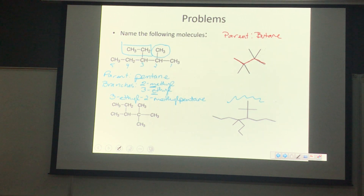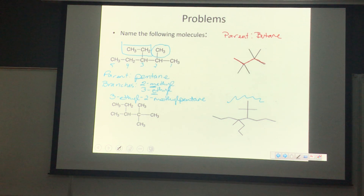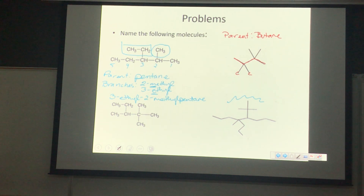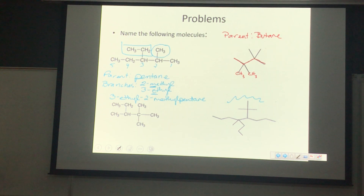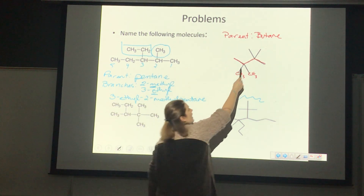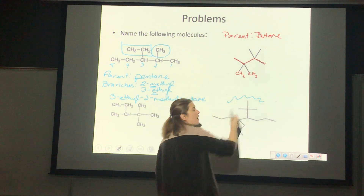We have a couple of branches. The first one is methyl, located on carbon two — so that's 2-methyl. We also have an ethyl located on carbon three of the parent chain — so that's 3-ethyl. Remember, our brains are going to want to put the two before the three in the name, but IUPAC says we're going to go with alphabetical order.